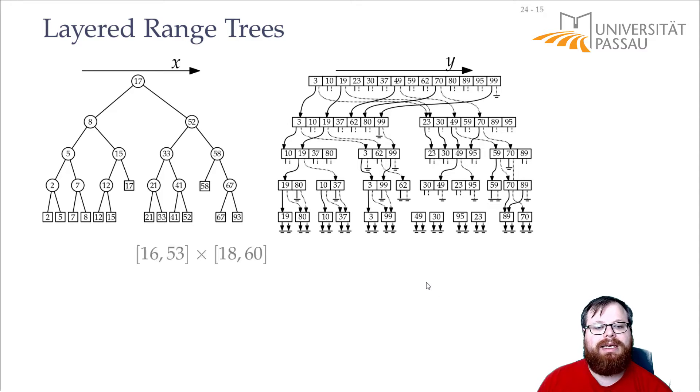Now, how does a query look like here? Let's say we want to have all the points with x-coordinate between 16 and 53, and y-coordinate between 18 and 60. We do, again, a first-level query here. So, we find all those canonical subsets. And then, in the second level, we have to do our query here. So, this subset gives us this point. This is easy. We just check, does the y-coordinate lie inside? No, it does not. Continue.